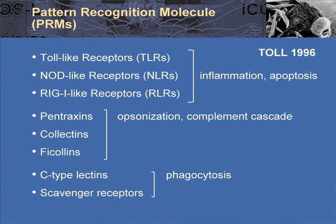I don't want you to think that we just have toll receptors as pattern recognition molecules — we have many others. There are the NODs and the RIGs, which recognize other bacterial and viral antigens. We have soluble molecules, which I've already talked about — pentraxins, collectins, and ficolins, which can opsonize and activate complement. And we also have phagocytically expressed molecules like the C-type lectins and scavenger receptors that can recognize these general patterns.